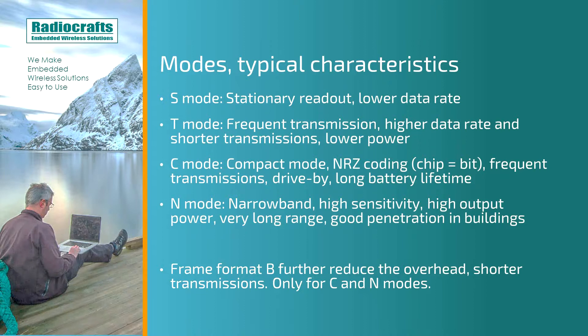We also have frame format B, which further reduces the overhead and makes each transmission shorter. Frame format B can be used with the C mode and the N mode.